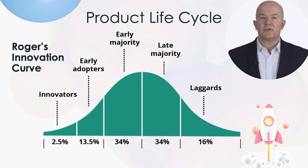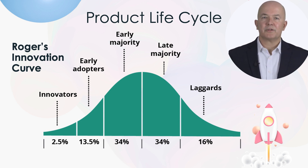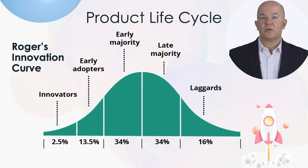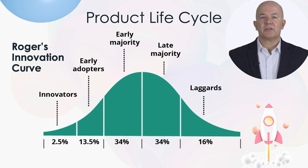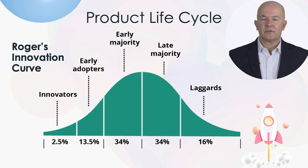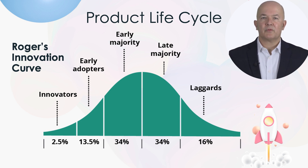What the graph shows is that when you launch a new product or service, the first people to buy your offering will be innovators. These are the people who like to experiment and try new things. They are by their nature risk takers.